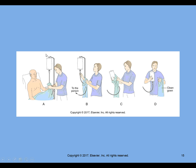In the case of an intravenous line, the garment is removed from the non-IV side first, then gathered and brought gently over the IV itself and then the IV tubing. It is then threaded up the IV tubing. Once you get close to the bag, you pull the bag off the IV pole and bring the bag through the sleeve. For a new gown, put your arms from the outside of the gown to the inside, then thread the gown all the way down the tubing and over the person's arm that has the IV.